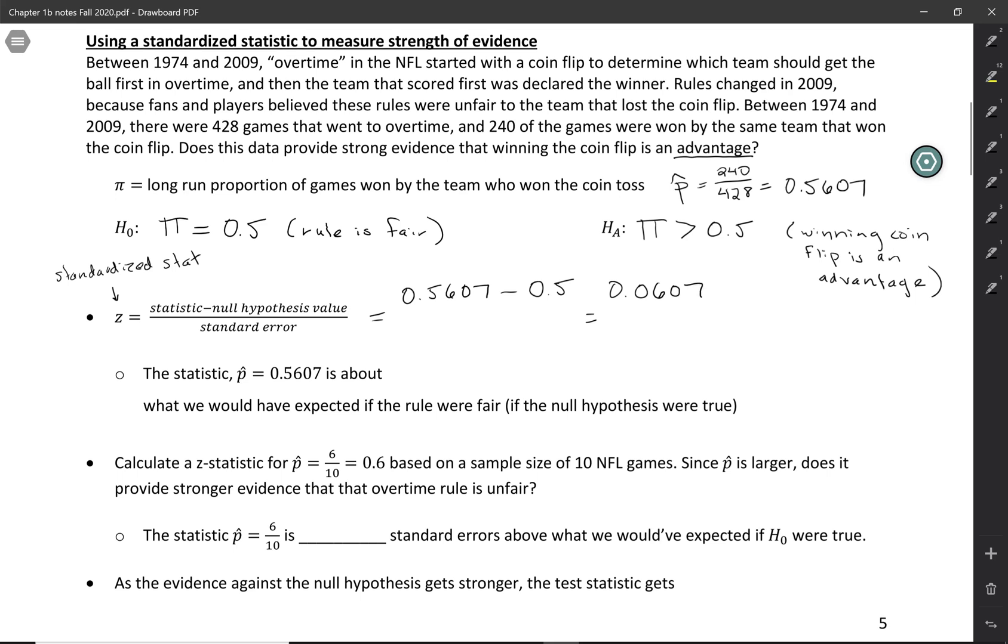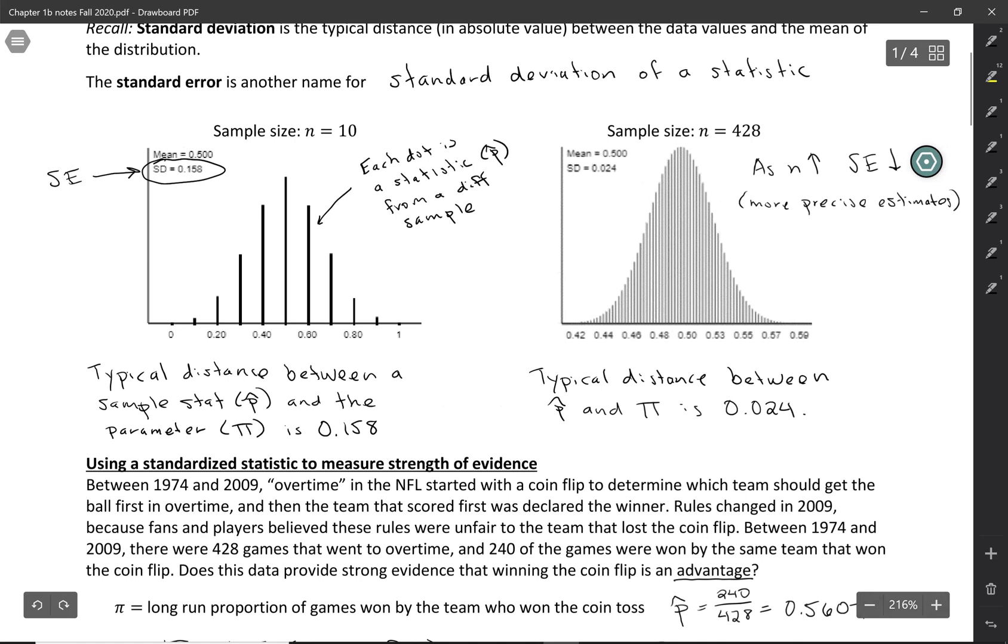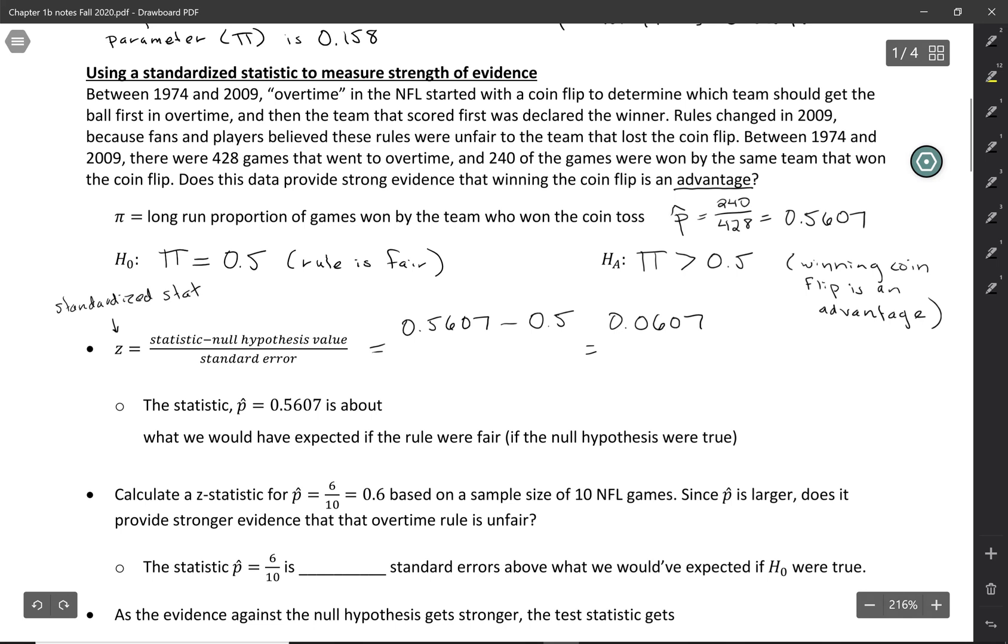But is that enough to be convincing? It's sort of hard to tell just by looking at that, so instead we're going to standardize by putting it in terms of the standard error. We had this sample size of 428 looking at the coin flips, and the value for the standard error here was 0.024. I'm going to fill in that standard error into the formula for my z-statistic.